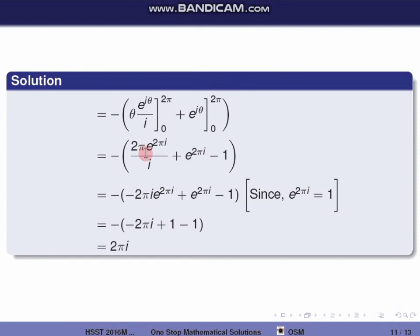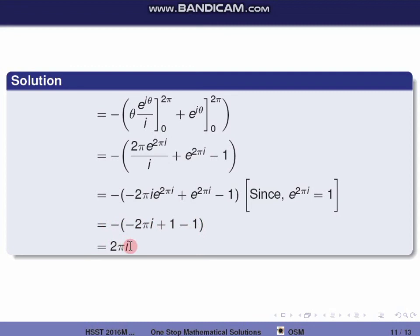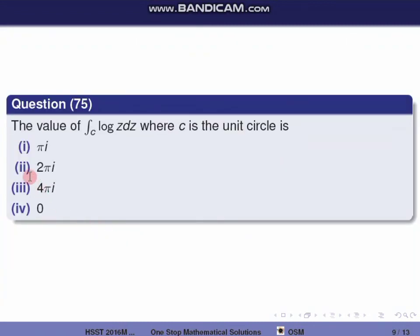Applying the limits: at theta equals 2π, we get minus 2π e raised to 2πi divided by i minus 0, plus e raised to 2πi minus 1. Since e raised to 2πi equals 1, this gives minus 2πi divided by i plus 1 minus 1. Multiplying numerator and denominator by minus i: we get minus 2πi times (minus i) divided by i squared, which simplifies. The 1 minus 1 terms cancel, giving the final value as 2πi. So the correct option is the second one.